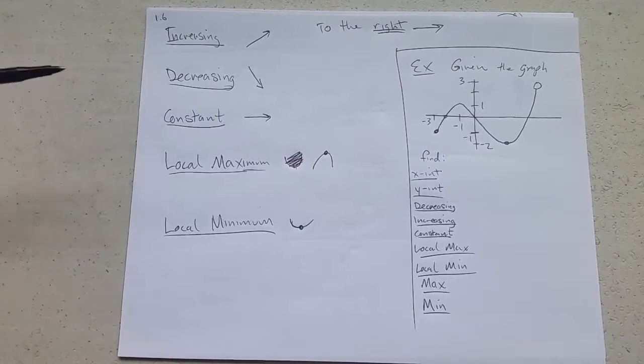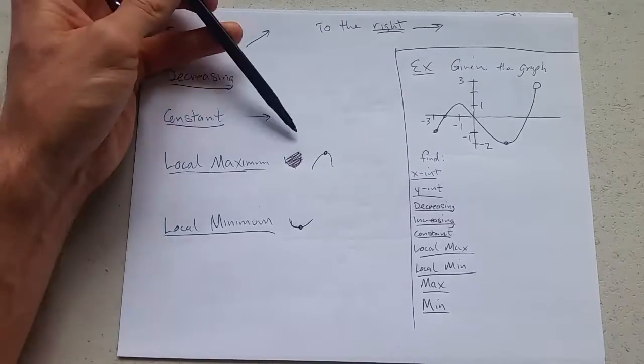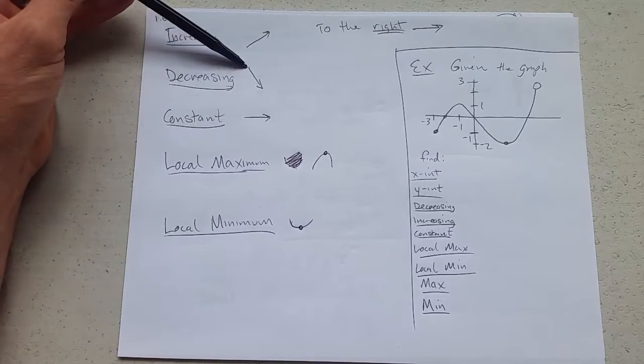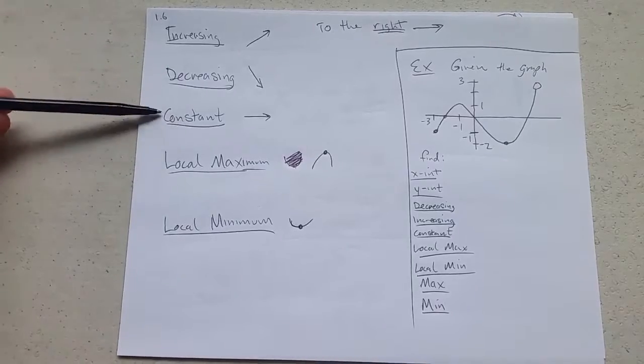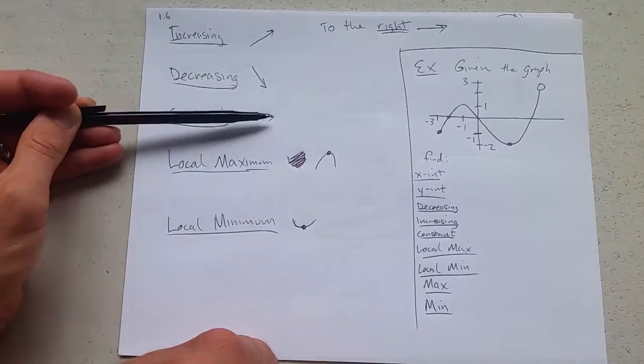Decreasing is going down, but it means when you go to the right, you're going to go downwards. So we have the down to the right arrow. Constant, not going up, not going down, staying flat, in this case flat to the right.